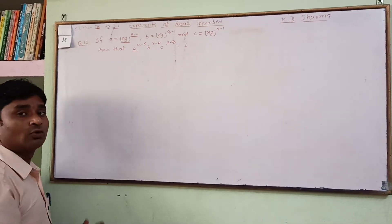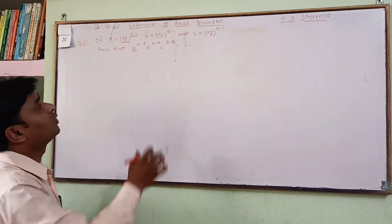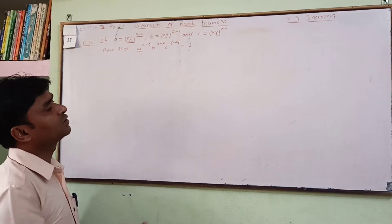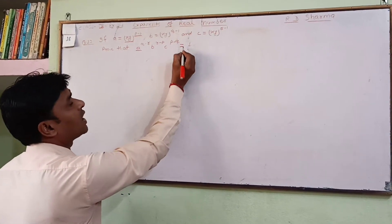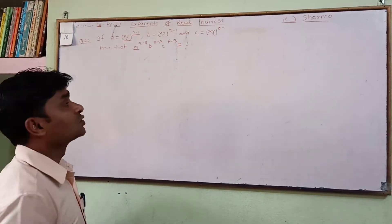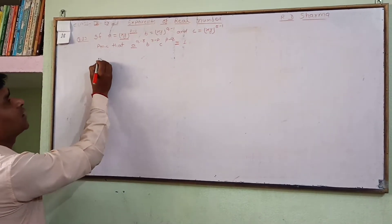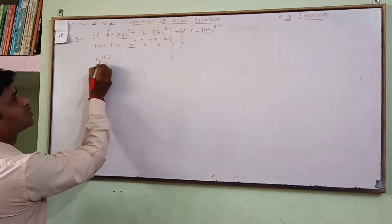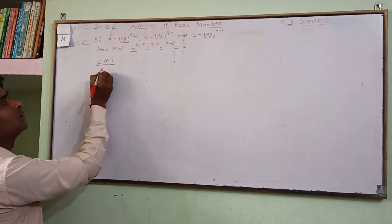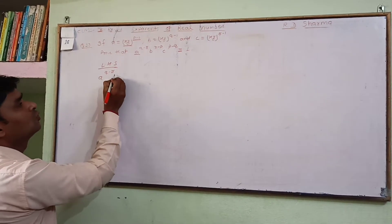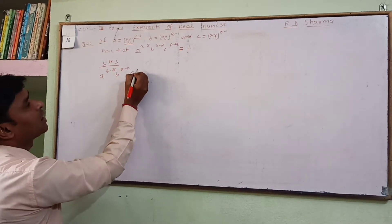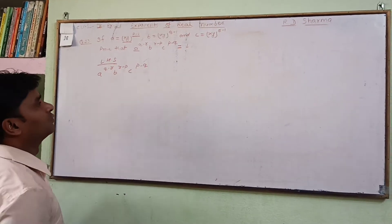To find out and prove that, first of all we write LHS. In LHS, what is given? That is A to the power q minus r, into B to the power r minus p, and C to the power p minus q.